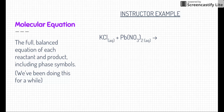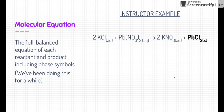The molecular equation is just the full balanced equation that has both the reactants and the products and their phase symbols. This is the type of equation we've been doing for a long time. Go ahead and pause this video and see if you can figure out the products of this reaction, balance it, and figure out the phase symbols. Here's the answer: two potassium chloride (aqueous) and lead two nitrate (aqueous) react to form two potassium nitrate and lead two chloride, which is a precipitate. This is a double replacement reaction, and we used solubility rules to figure out the phase symbols — potassium nitrate is aqueous and lead two chloride is a precipitate.